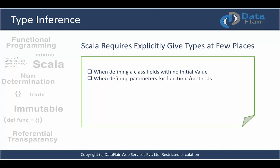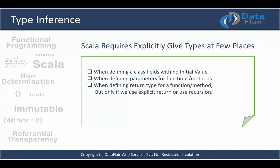The second case is when defining parameters for functions or methods. Suppose you are writing a function 'def myFunction' and passing two parameters — it's always better to define the parameter types, otherwise the compiler may not be able to understand them when those functions are called. There are also type parameters as an alternative, which we'll look at later. Third, when defining the return type for a function or method, but only if you use an explicit return statement or recursion — when you define a recursive method you should always give an explicit return type.